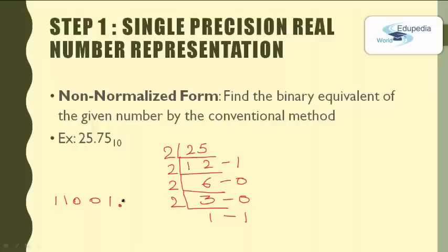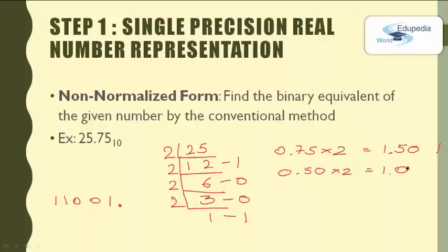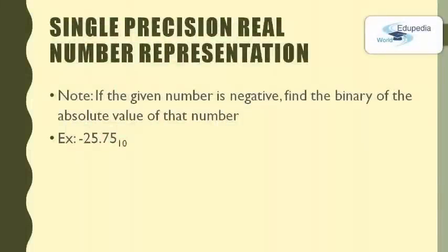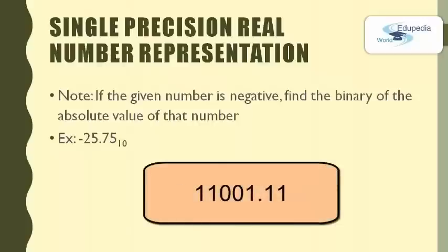For the fractional part, multiply 0.75 by 2 — it equals 1.50, so the integer part is 1. Take the fractional part 0.50, multiply by 2 — it equals 1.00. The fractional part is now 0, so we stop. Taking the integer parts gives us 11, so the binary representation of 0.75 is .11. We say the value 11001.11 is in non-normalized form. If given a negative number, such as −25.75, we find the binary of its absolute value, giving the same 11001.11.